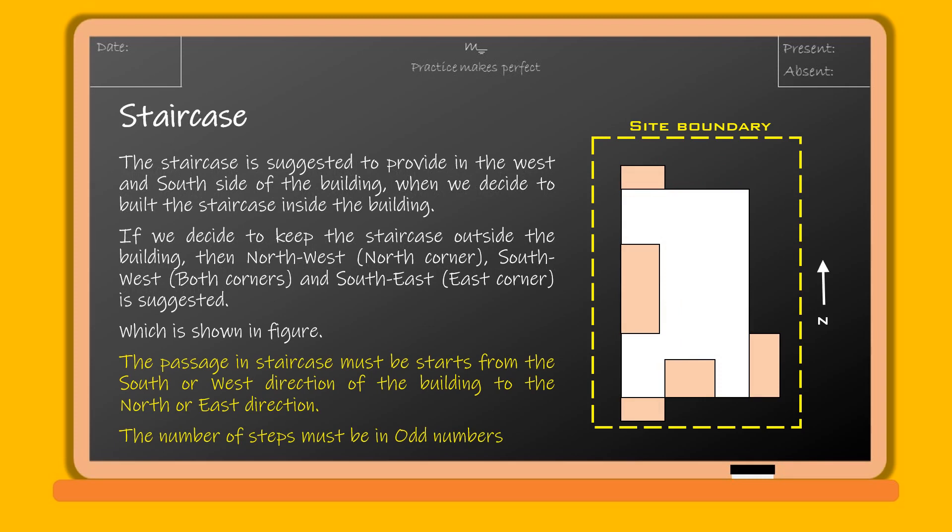The staircase is suggested to be provided on the west and south side of the building when placed inside. If the staircase is outside the building, then the northwest corner, southwest corner, and southeast-east corner are suggested, as shown in the figure.